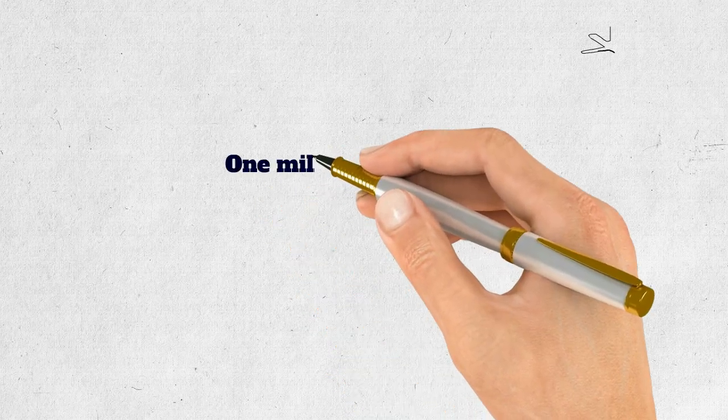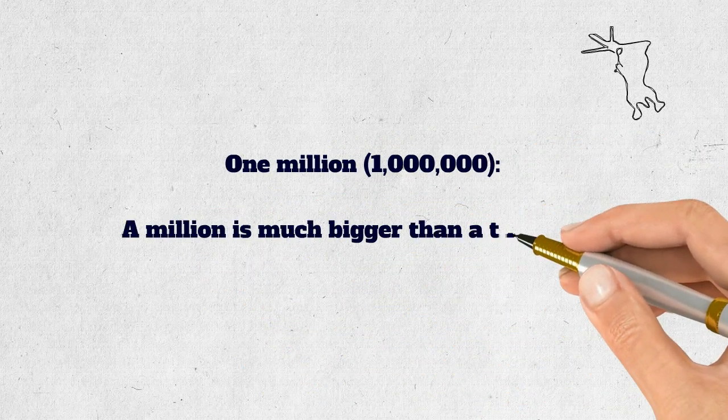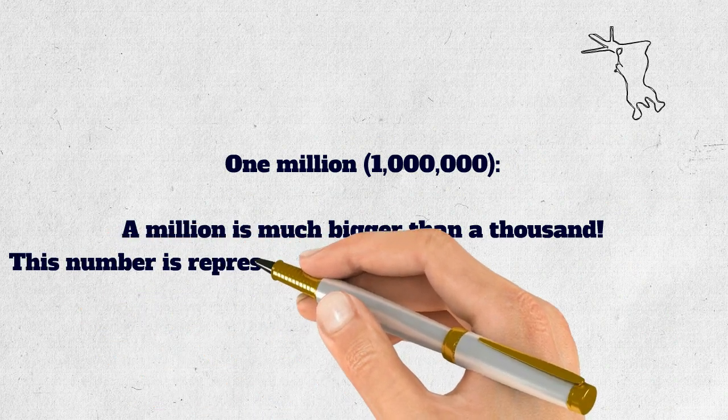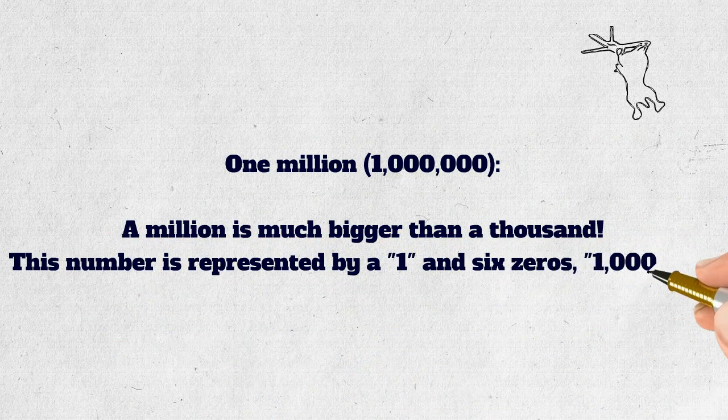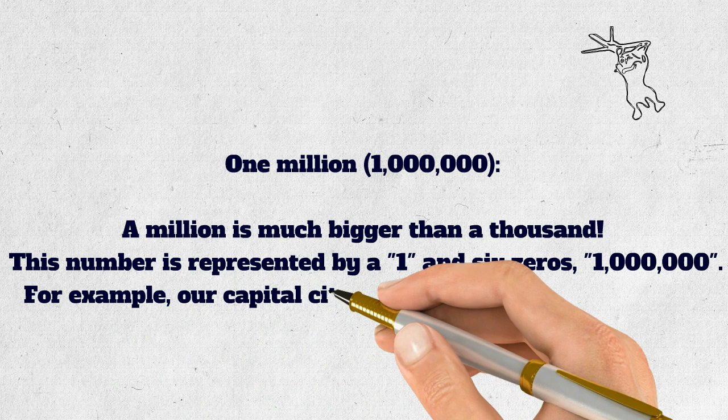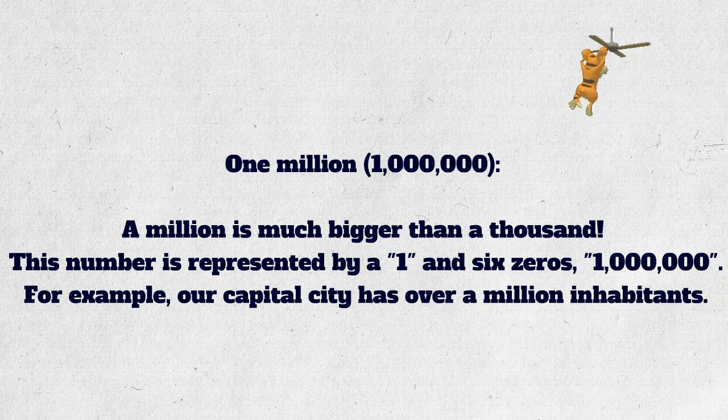One million. A million is much bigger than a thousand. This number is represented by a one and six zeros, 1,000,000. For example, our capital city has over a million inhabitants.